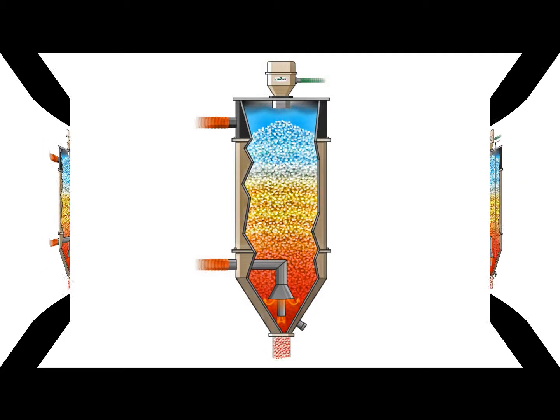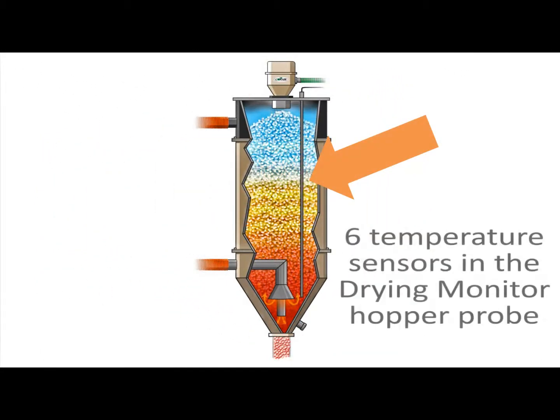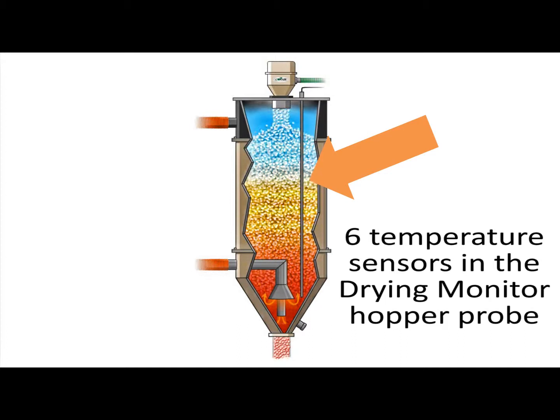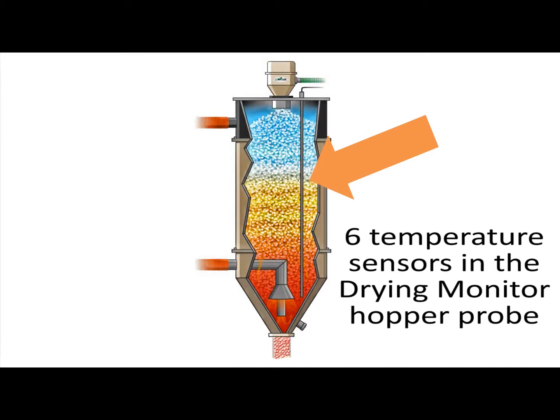The drying monitor uses its six sensors to continuously read and record that temperature profile to confirm everything is working as it should or to report that something is wrong.